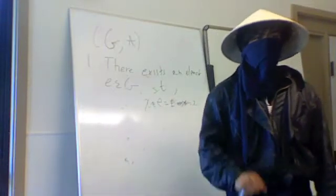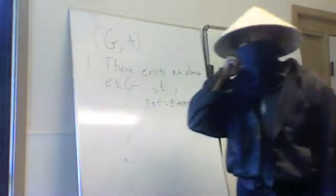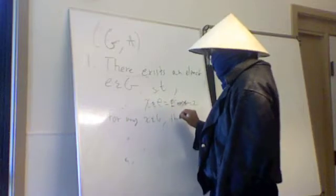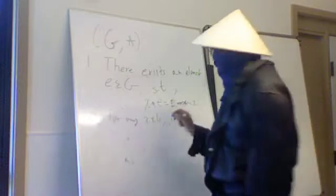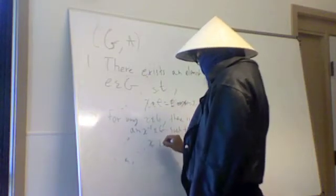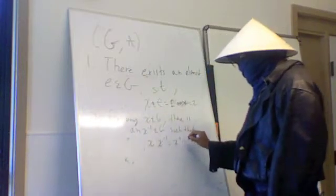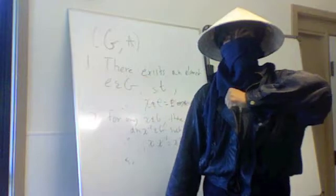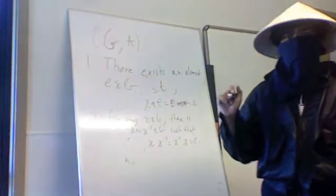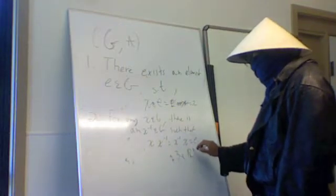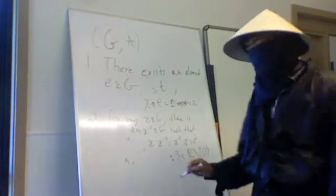Second property: for everything I do, there must be a way to undo it. We call this existence of inverses. For any x in G, there is an x-inverse in G such that x ★ x⁻¹ = x⁻¹ ★ x = E. For example, look at 3 in ℝ — we're looking at ℝ minus {0} under multiplication. To get back to 1 (the identity), multiply by 1/3. Very simple.